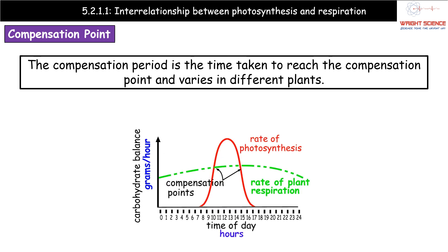You will also see the phrase compensation period, which is always time-related. The compensation period is the time taken to reach the compensation point. It is not one fixed time — it depends on the plant, so different plants will have different lengths of time to reach the compensation point and therefore different compensation periods.